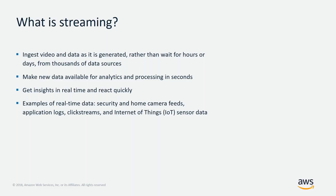What makes it streaming is acting on that data now in real-time or near real-time instead of waiting. A good example: if you have an Apache web server or EC2 instance and you're logging information about customer behavior, what makes it streaming is if, as the data is continuously generated, you continuously send it to a durable storage mechanism like Apache Kafka or Amazon Kinesis, process it continuously in real-time, then either react to it or persist it to a long-term store like a data lake or data warehouse.